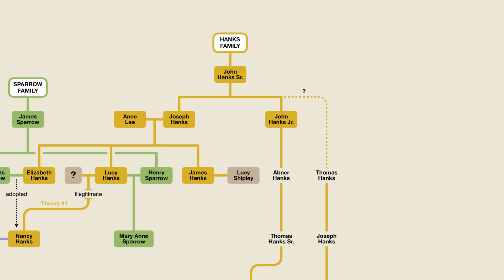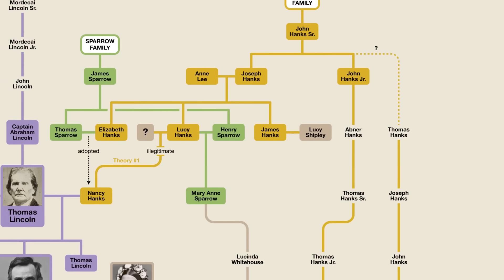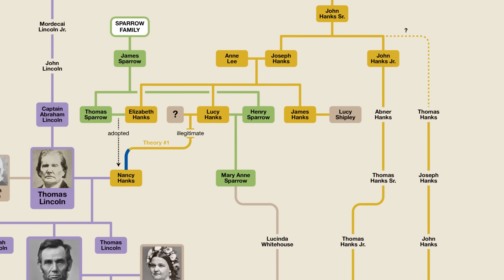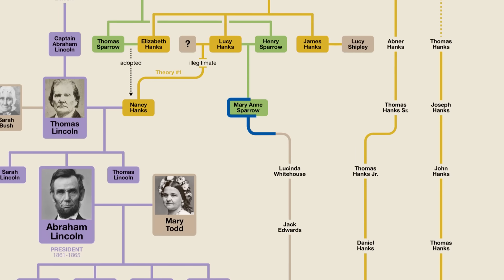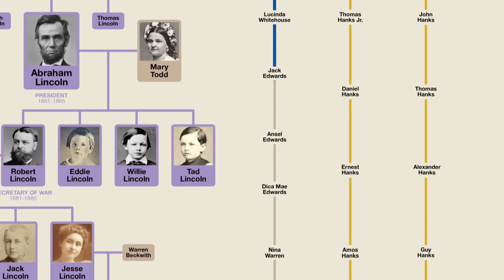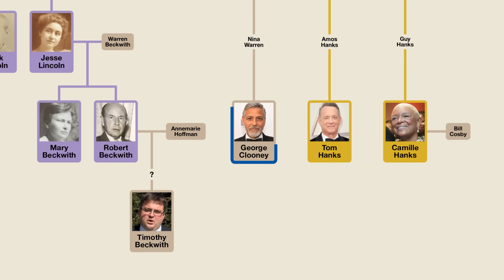I'll be diving into this issue in greater detail later this year when I deal with the family tree of Thomas Jefferson. For now, if anyone knows more details about how Camille Cosby's line connects to the other members of the Hanks family, do let me know in the comments. It's possible that it has nothing to do with slavery at all. Finally, there's one more Hollywood connection that's even closer than the Tom Hanks one. Nancy Hanks was the illegitimate daughter of Lucy Hanks, and Lucy Hanks went on to marry Henry Sparrow. She and Henry had several children, one of whom was named Mary Ann Sparrow, and Mary Ann Sparrow is the great-great-great grandmother of the famous actor George Clooney. So, that makes Abraham Lincoln and George Clooney first half cousins, five times removed.